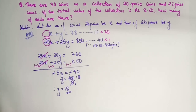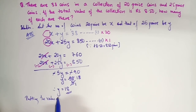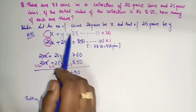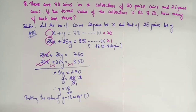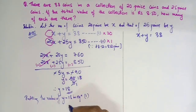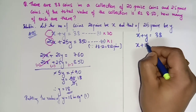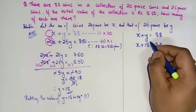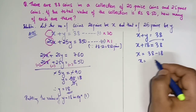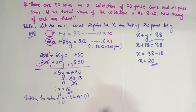Now putting the value of y = 18 in Equation 1 (which is simpler): x + y = 38. Putting y = 18: x + 18 = 38. Therefore x = 38 − 18 = 20. So x = 20.